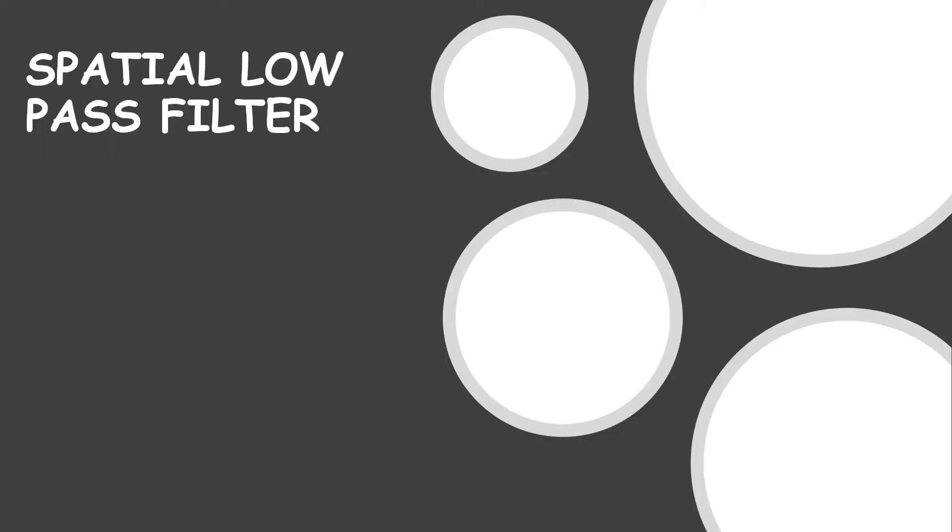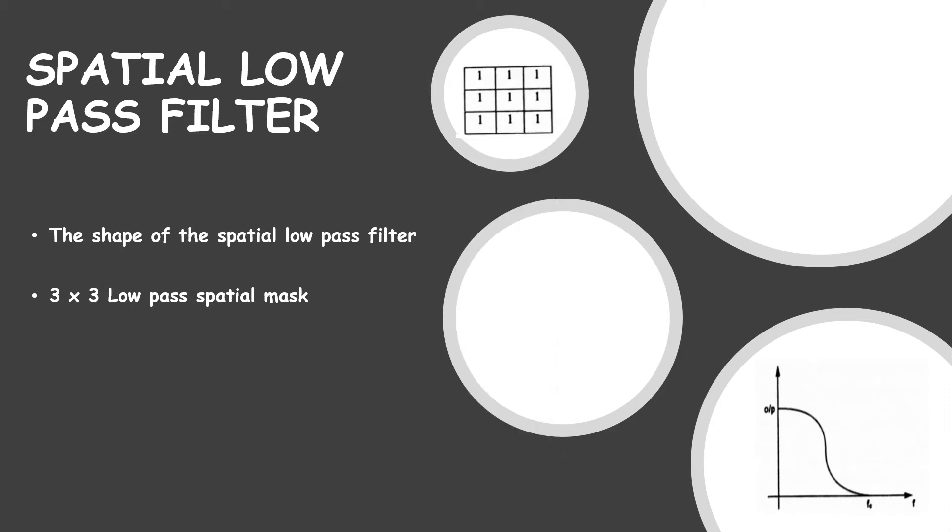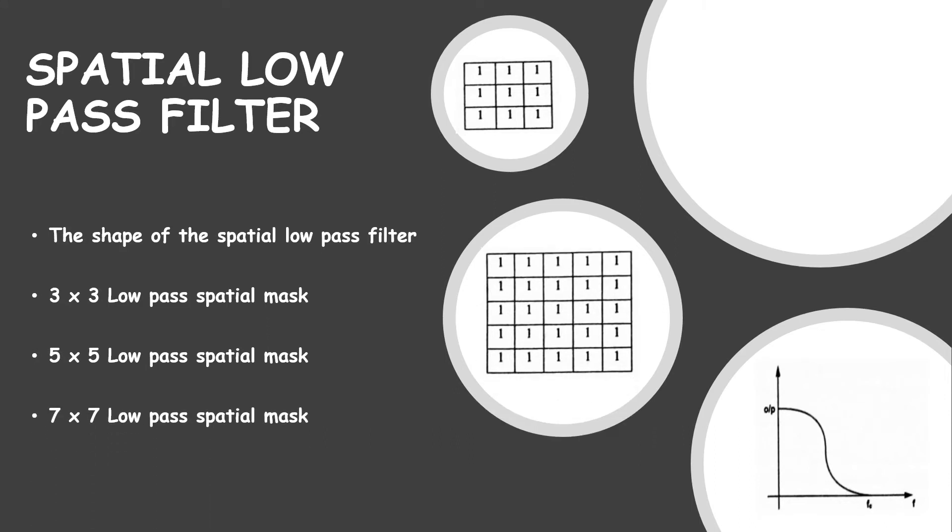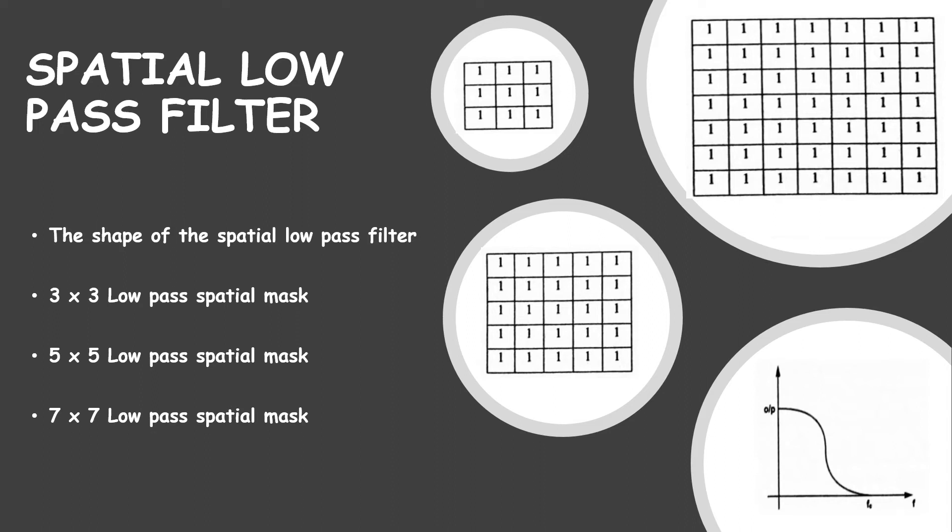Moving on to the shape and mask of spatial low-pass filter. This is how the spatial low-pass filter's response looks. For a 3×3 spatial mask, all the values are 1. In this particular filter, the simplest arrangement is to have a mask in which all the coefficients have a value of 1. For a 5×5 and for a 7×7, all the boxes are filled with mask value 1. As the size of the mask increases, the smoothing effect or blurring effect also increases.